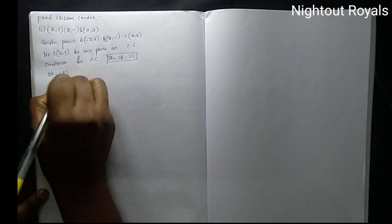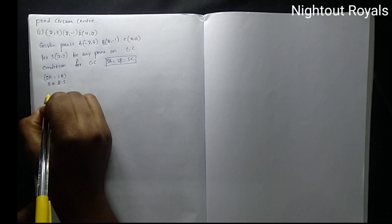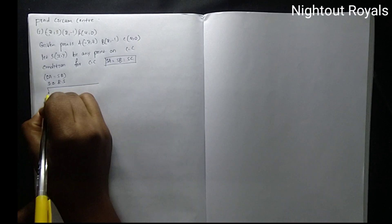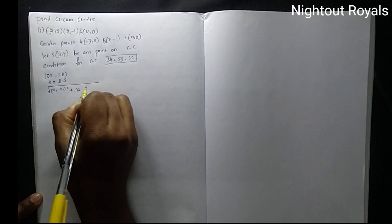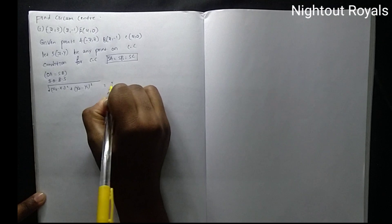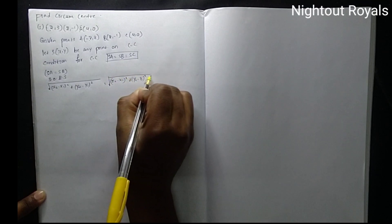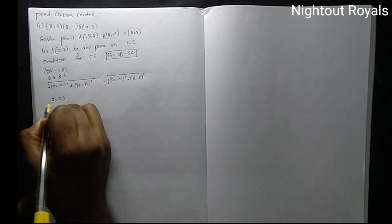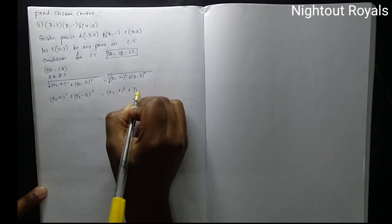SA equal to SB. S is (X, Y), A is (2, 3). Squaring on both sides. The formula to find distance is: root of (X2 - X1)² + (Y2 - Y1)². When we square both sides, the two roots cancel, leaving (X2 - X1)² + (Y2 - Y1)² equal to (X2 - X1)² + (Y2 - Y1)².